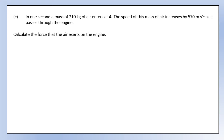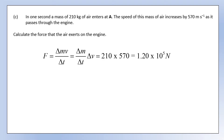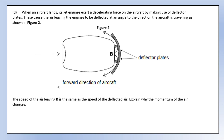In one second, a mass of 210 kilograms of air enters at A, and the speed of this air increases by 570 meters per second as it passes through the engine. Calculate the force the air exerts on the engine. Using Newton's second law, the change in velocity is 570 m/s and the mass per second entering is 210 kg. Combining these gives units of kilogram meters per second squared, which is a newton - so this is fairly straightforward.